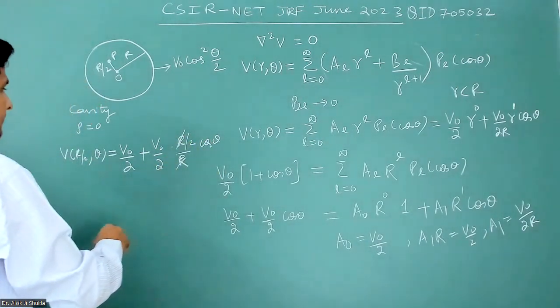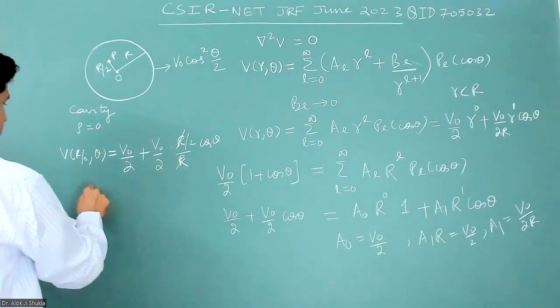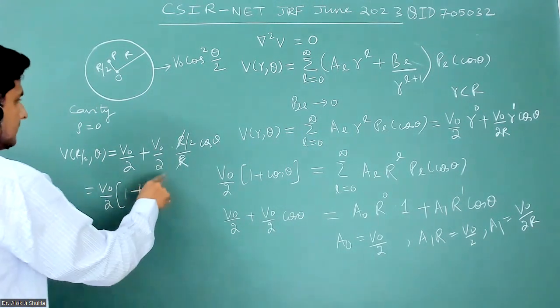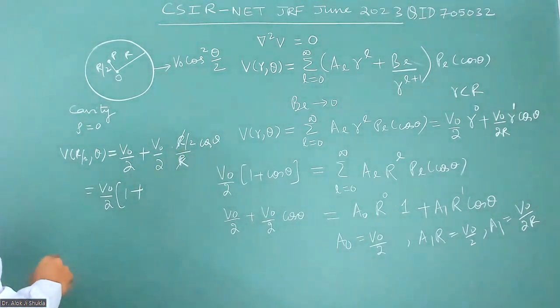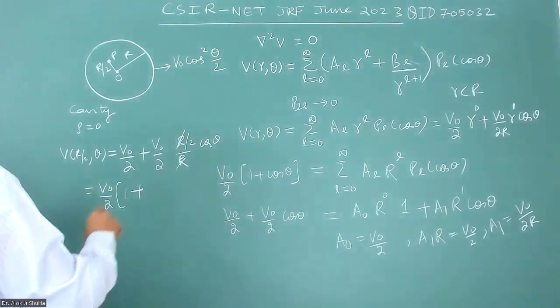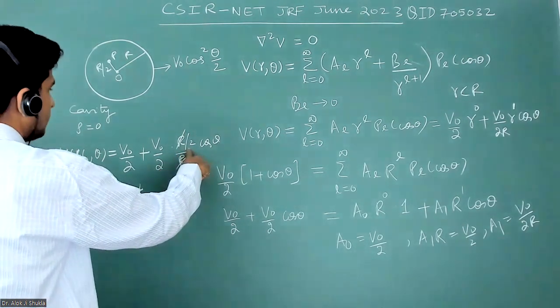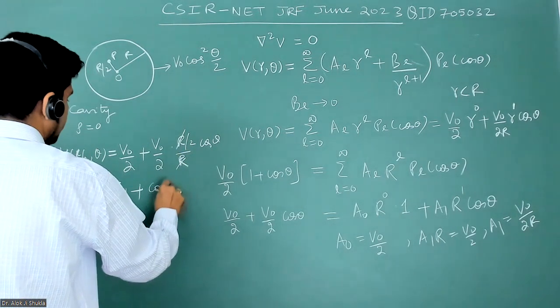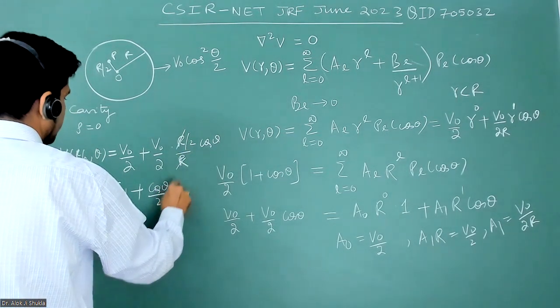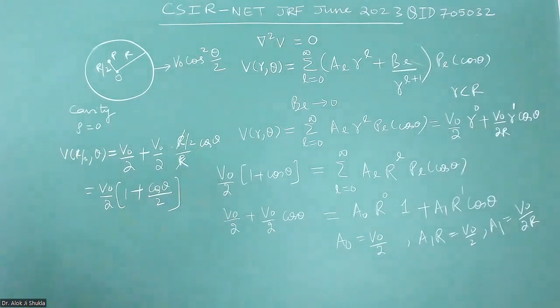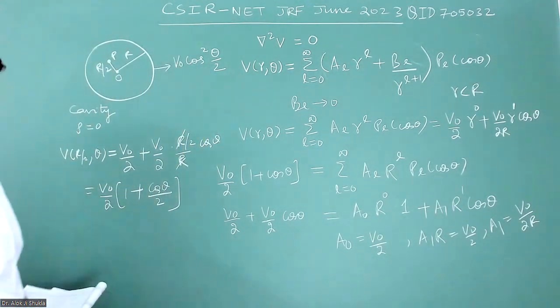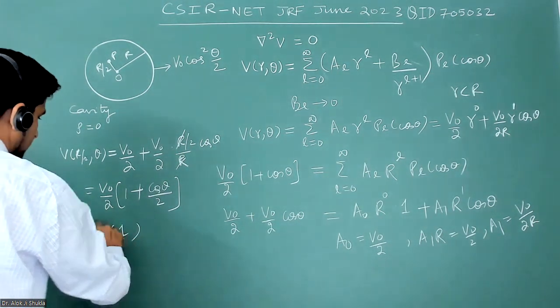This will become V₀ by 2 plus V₀ by 2 times R by 2 by R times cos theta. R and R get cancelled and it will become V₀ by 2—you can take common—it will become (1 plus cos theta by 2). Let me check which one of the options is correct. It is option first that is correct.